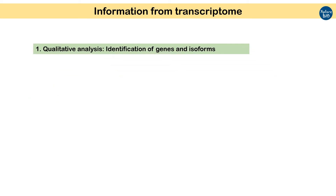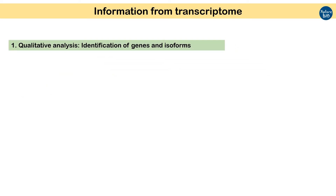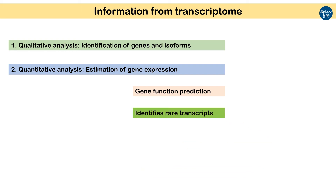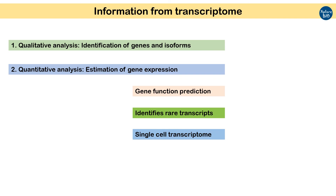Transcriptome analysis serves two main purposes. The first is the identification of genes and their isoforms, also known as qualitative estimation. The second is to estimate gene expression or relative expression in different biological samples, also known as quantitative estimation. Thus, transcriptome is a very useful technique to compare expressional changes in contrasting samples or after various treatments. It provides clues about the possible function of different sets of genes based on their expression. RNA-seq also provides information about rare transcripts with lower expression, which was difficult with microarray. Recent advancements have made it possible to sequence and provide expression profiles of single cells too.